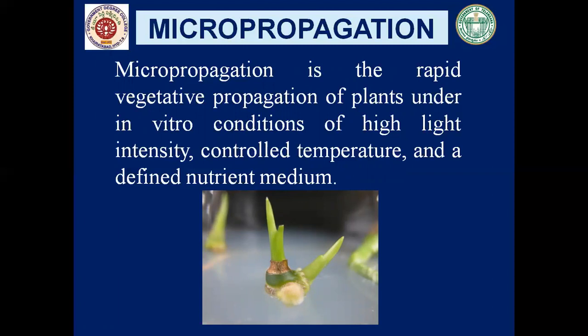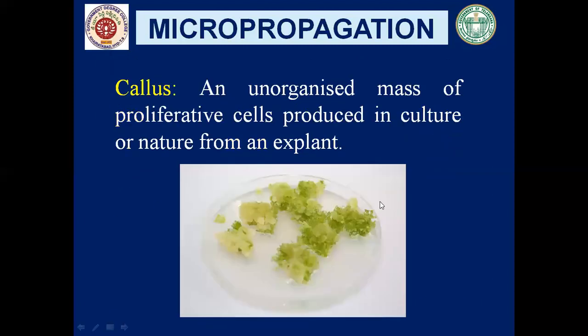It is possible to make a large number of callus pieces from the original stock culture during subculture. When you take a piece of callus and place it onto a nutrient medium or culture medium, that is known as subculture. From this original stock, when you place a small piece of callus on an appropriate culture medium, it develops into a plant. Like this, from one callus we can produce a large number of plantlets.